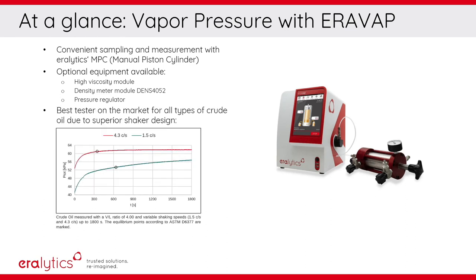AeroVap provides the most accurate results due to the superior shaker design and is therefore the best vapor pressure tester on the market for all types of crude oil. Its high shaking speed ensures complete pressure equilibrium within a reduced measuring time. In contrast, insufficient shaking causes biased results of up to 12 kPa.